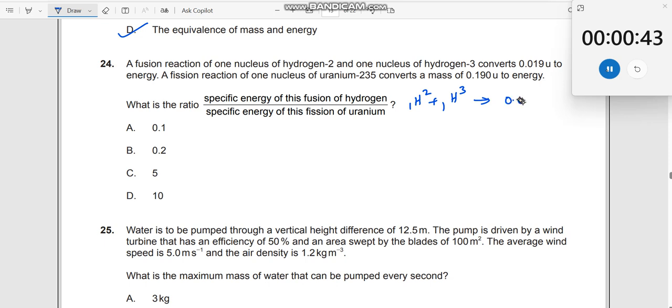it converts 0.019U to energy. It means the energy given out here is 0.019U. When I say this is mass over here, mass defect. So you should say Uc² is the energy given.